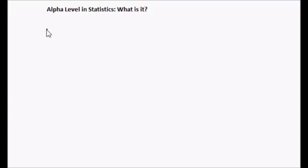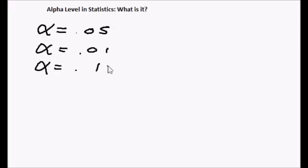You'll probably see the alpha level written like this, alpha of 0.05. You might also see an alpha level of 0.01 and sometimes 0.10. So what do these mean? Well an alpha level of 0.05 is 5%, 0.01 is 1%, and 0.10 is 10%.